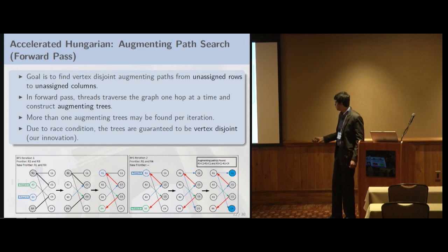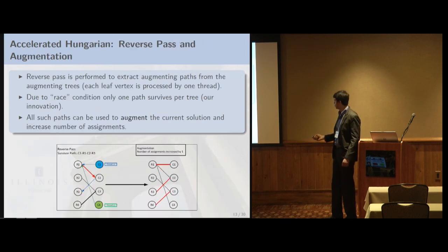And our contribution is that we actually parallelize this augmenting path search by using multiple threads to find these augmenting paths simultaneously. And we took advantage of this race condition where, basically, we figured out that if we use, if multiple threads are updating the parents and the child of each node, then what happens is that each thread basically can find multiple paths in parallel. And all these paths can be used in augmenting the solution. So that's where we get a lot of parallelism. Each iteration finds a lot of parallel augmenting paths.